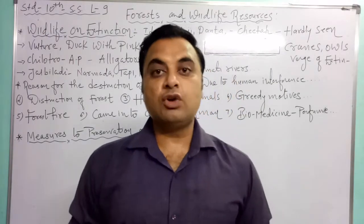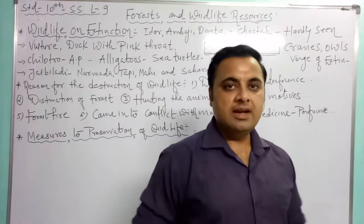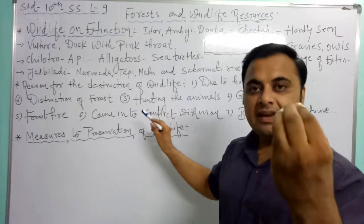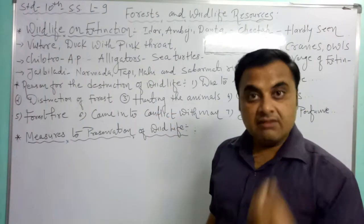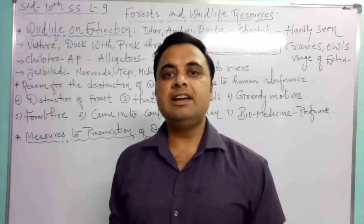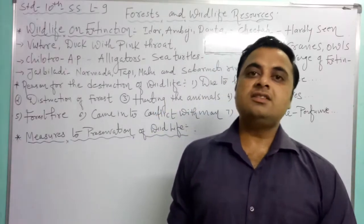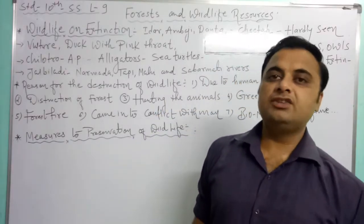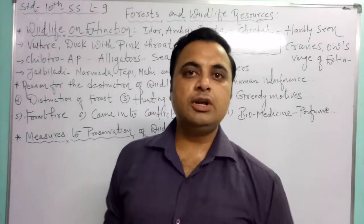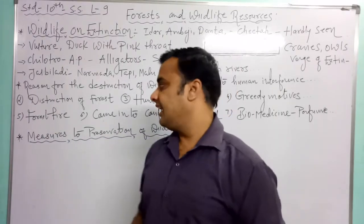This type of human-animal conflict is happening more and more because forest cover has become very less. In Gujarat, only 10% of the geographical area is forest. As a condition, at least a minimum of 33% of a geographical area should be forest, but in India it is only 22% and in Gujarat only 10%.